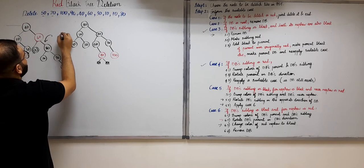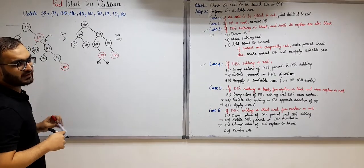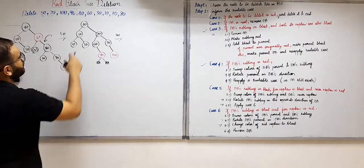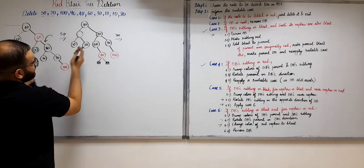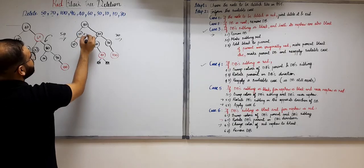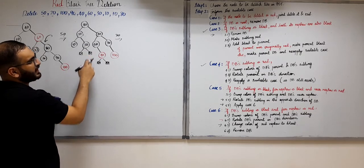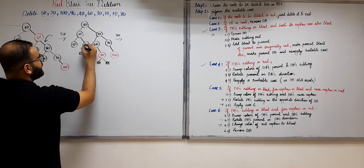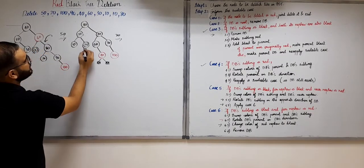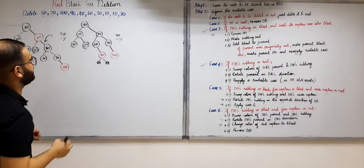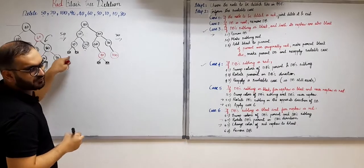Now let us delete the second element, 20. We cannot directly delete 20 because it is an internal node, so 20 will be replaced by either its in-order predecessor or in-order successor. Let us replace it with its in-order successor, 30. Now rather than deleting this node, we will actually delete the in-order successor. This 30 will be replaced by its child, which is an external node and is black, making this black node 30 double black. Now we want to remove this double black.